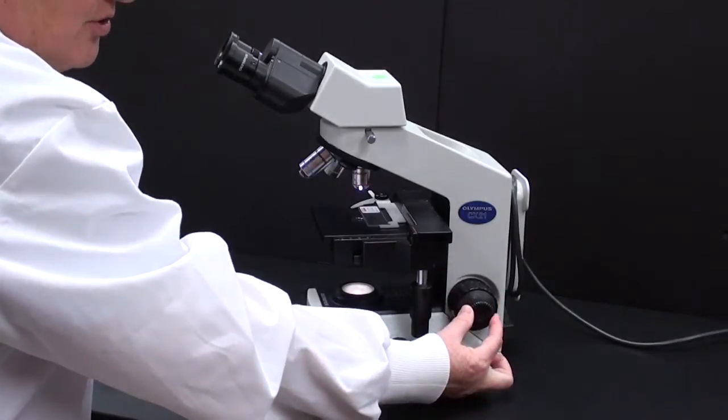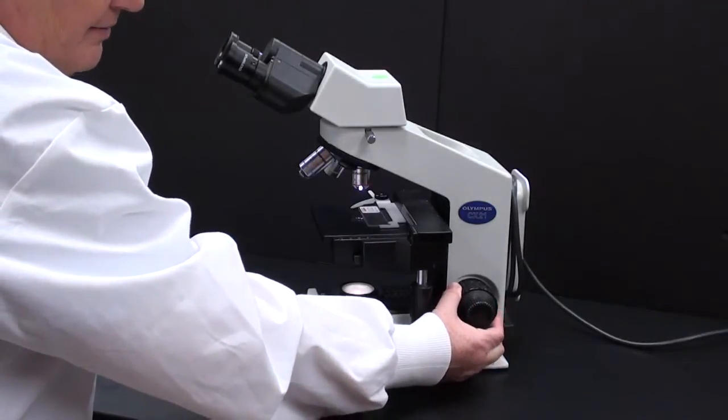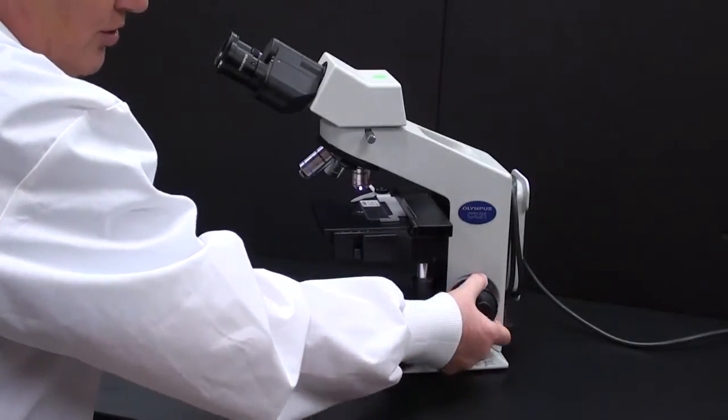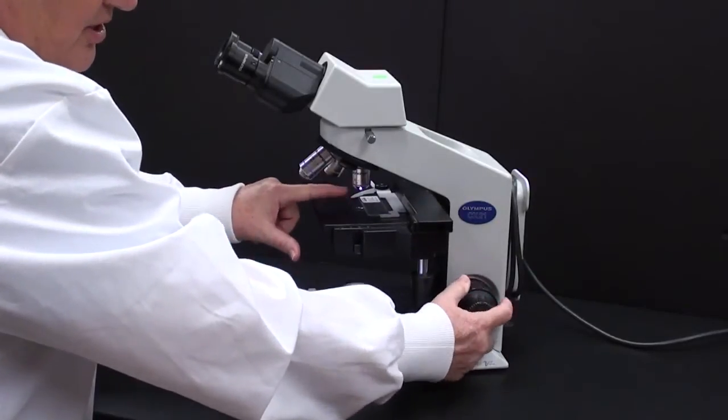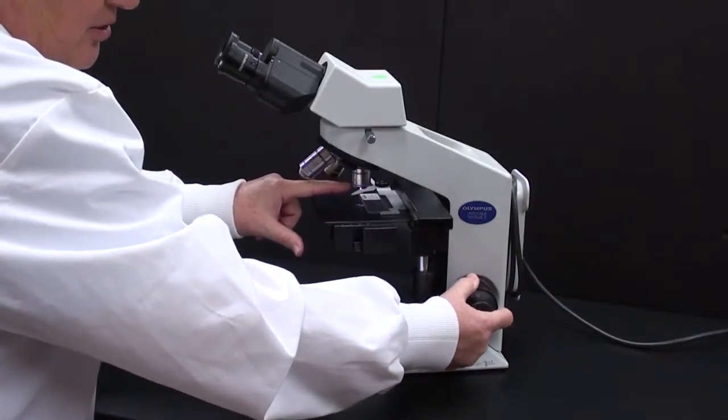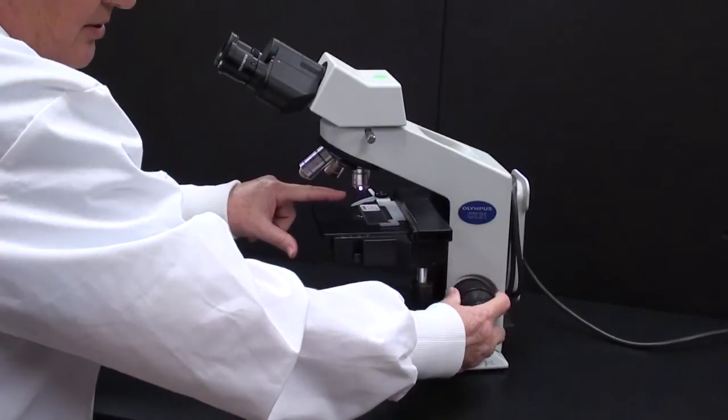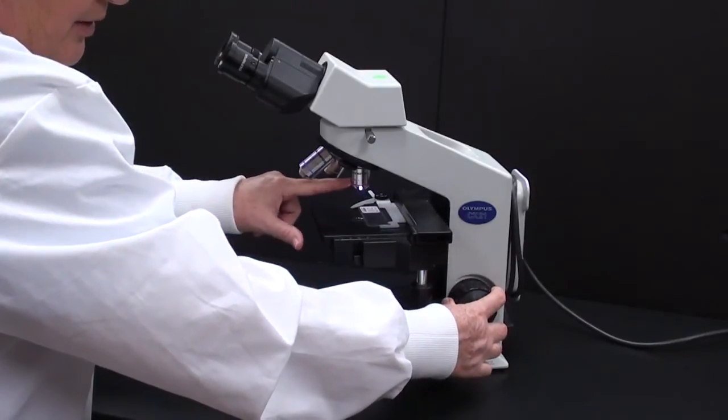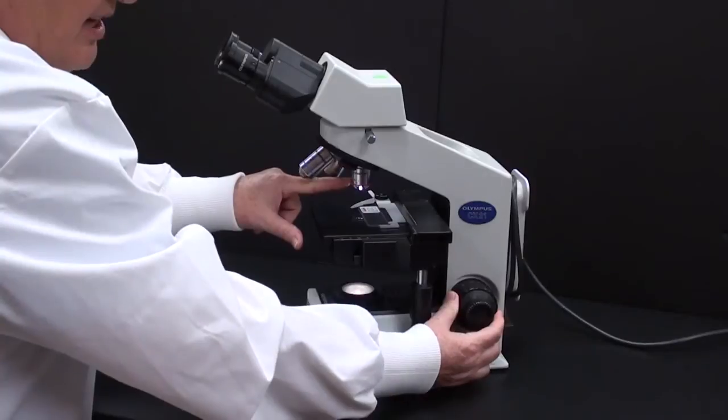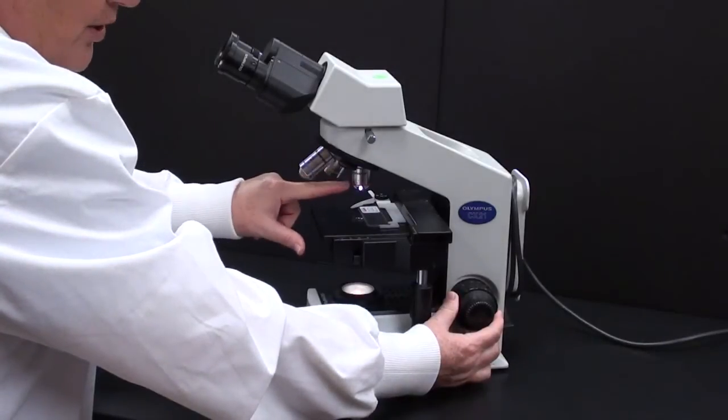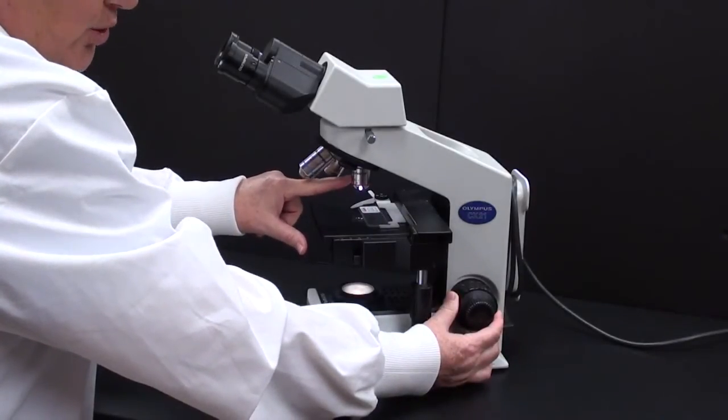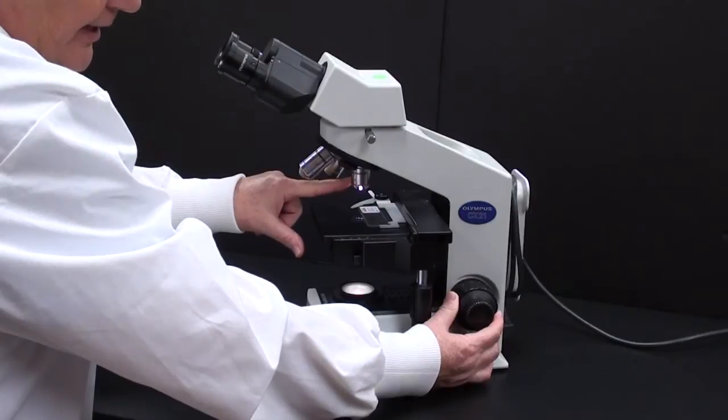These two knobs are focusing knobs. The large one is called the coarse focus knob. As you can see, it decreases the distance or increases the distance between the stage and the lens. It's only safe to use this knob when you're using the very shortest lens, the scanning lens.